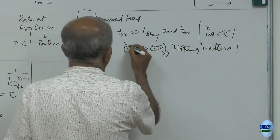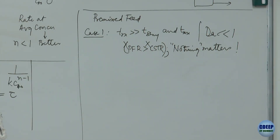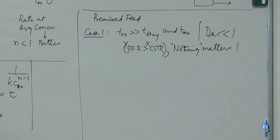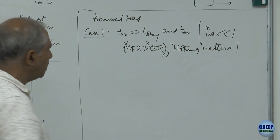PFR will have a better conversion than CSTR — maybe 5 or 7 percent better — which is not really worth worrying about, because rate constants are all experimentally measured and not known within better than plus or minus 10 percent. Given the uncertainties in rate constants, these differences are not worth worrying about.